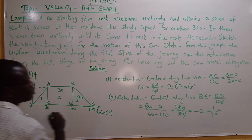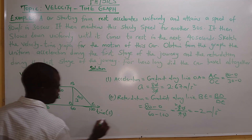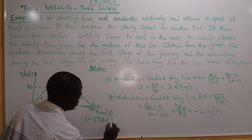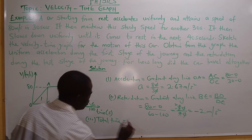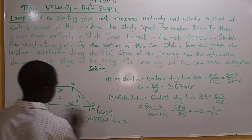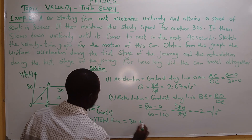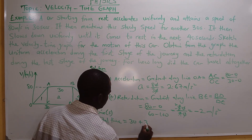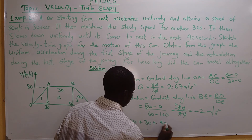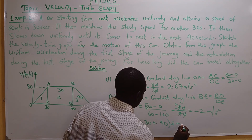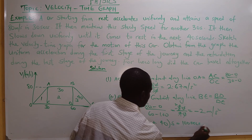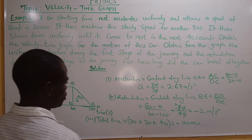For how long did the car travel in total? The total time is calculated by adding the durations of each phase: 30 plus 30 plus 40 equals 100 seconds.